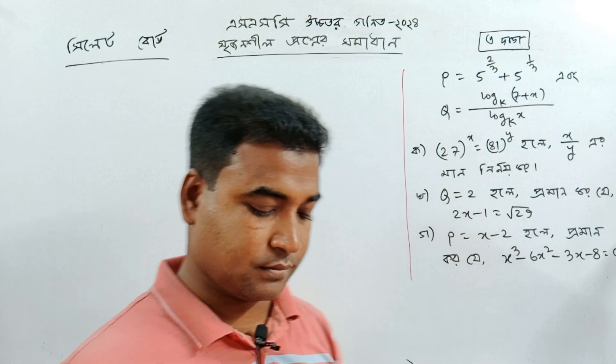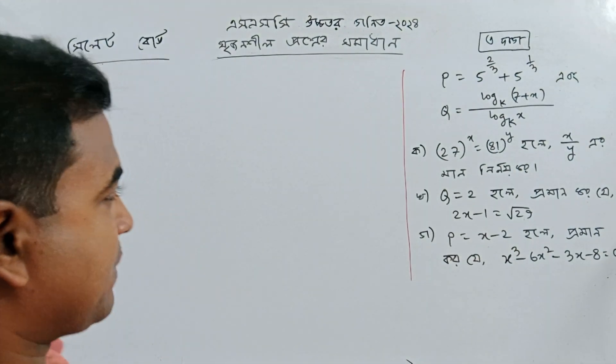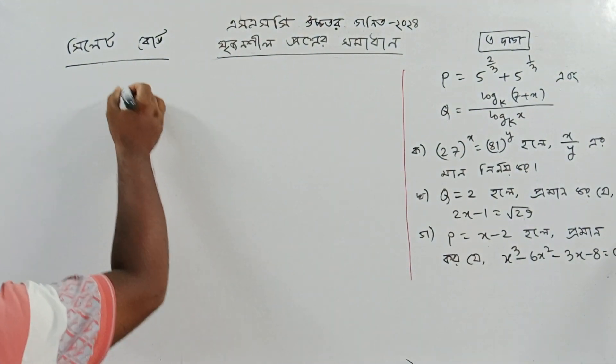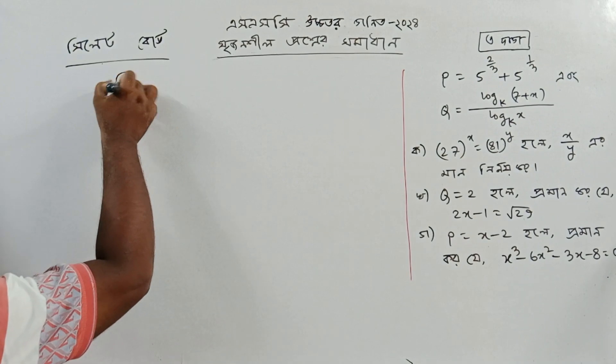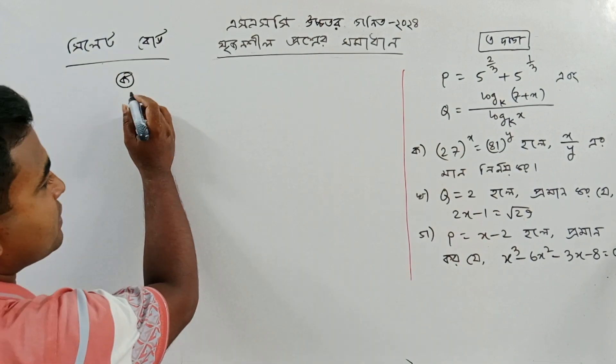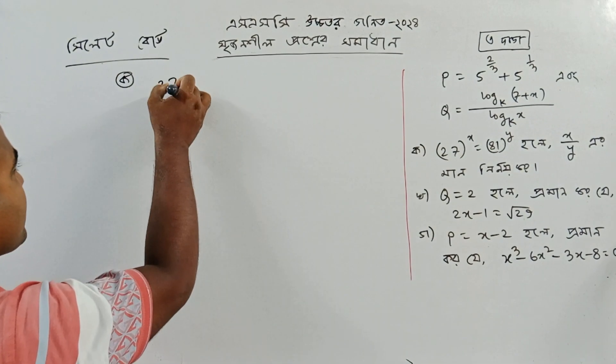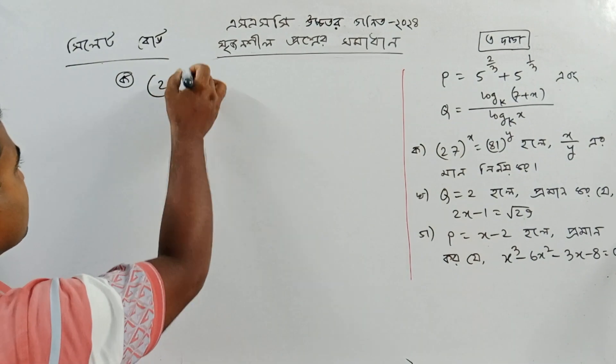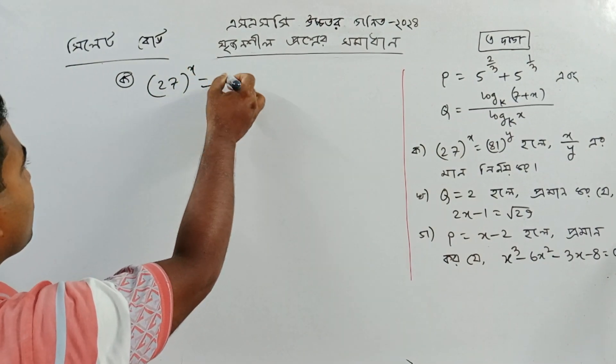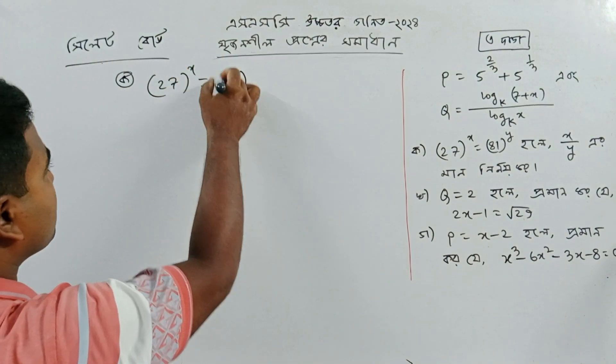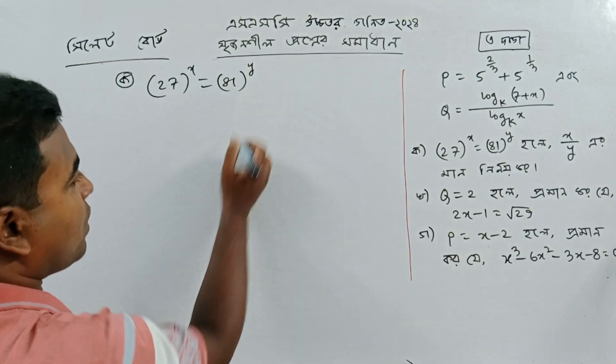Okay, let's start the solution. Tell me: if 27 to the power x equals 81 to the power y, what is the value of x divided by y?